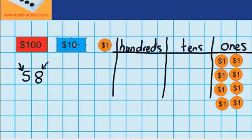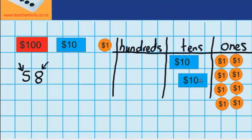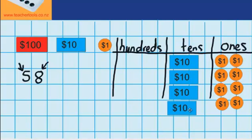So here's one, two, three, four, and five. So it's easy to see that 58 is made up of five tens and eight $1 coins.